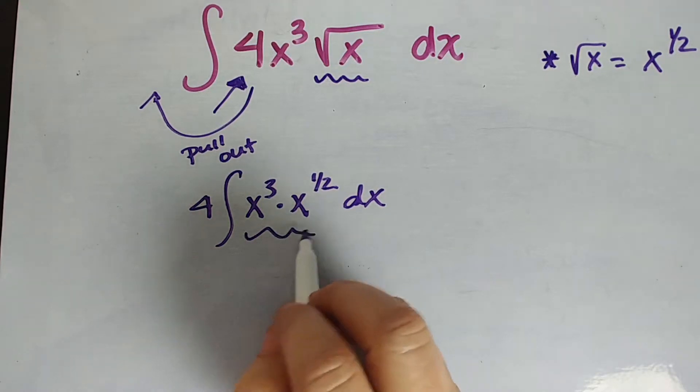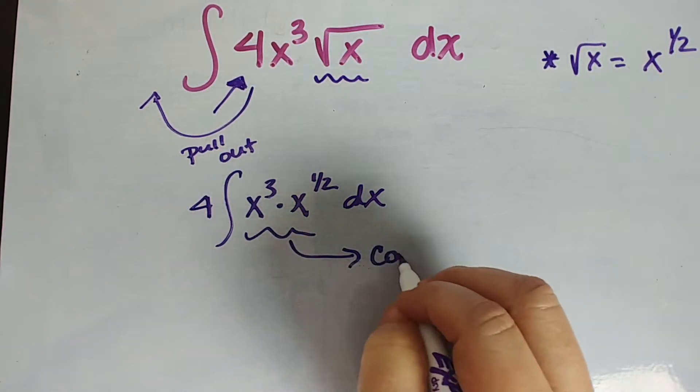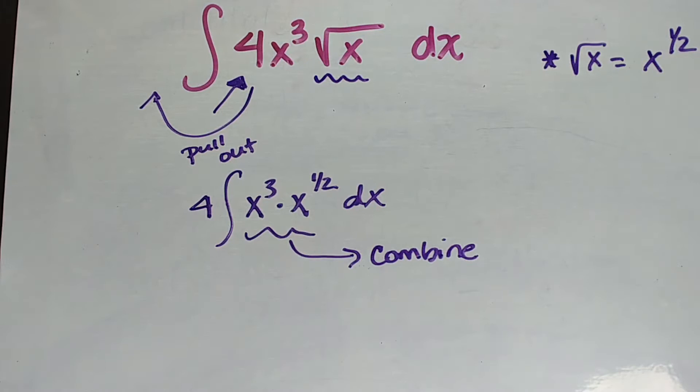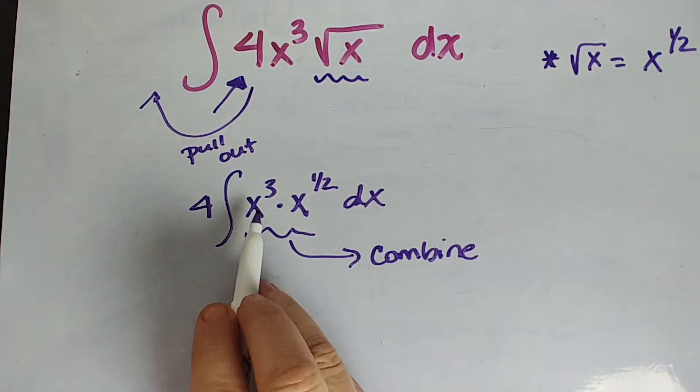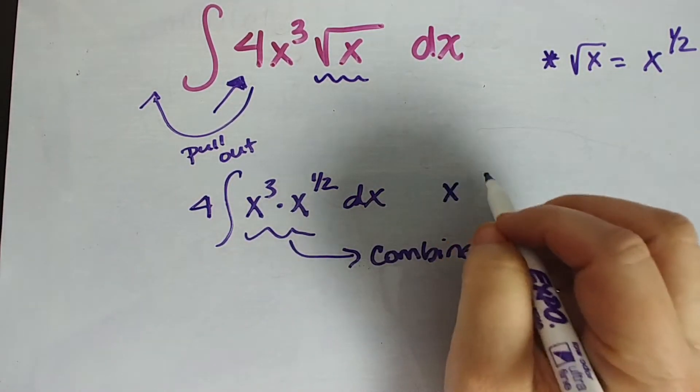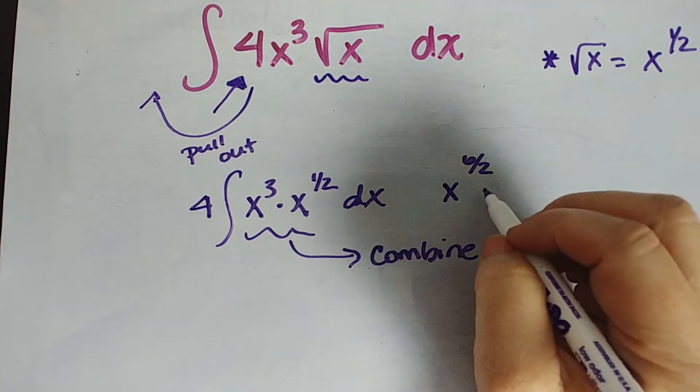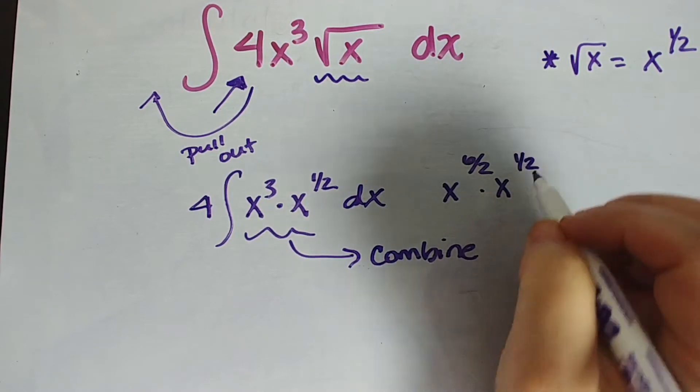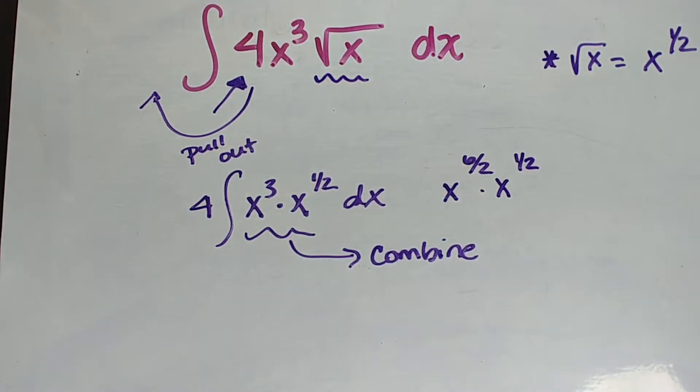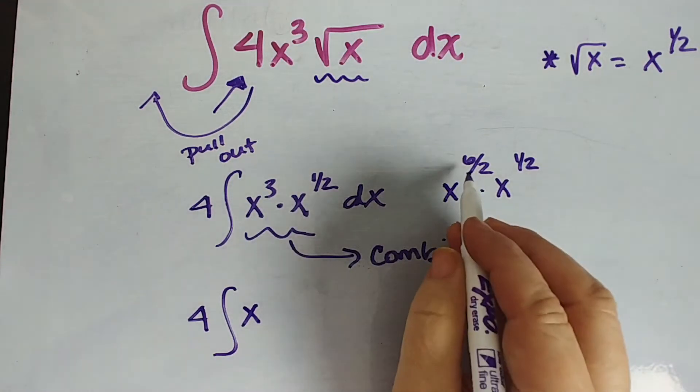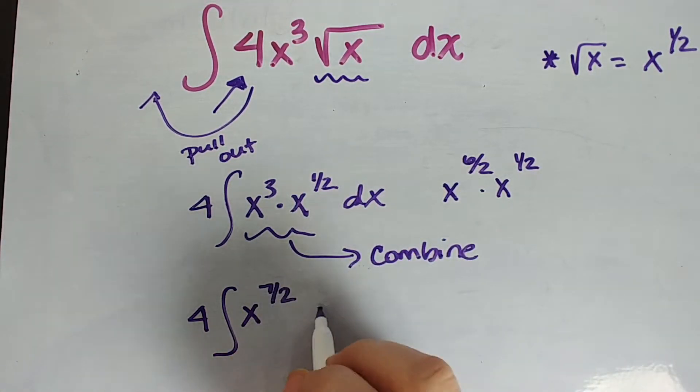Well, now we're going to combine our like terms, like it was seventh grade again, right? We're going to combine those. You wouldn't leave two times three in a problem. You would write that as six. So really x to the third is six halves. If we wrote it with a denominator of two times x to the one half. Remember when you have the same base, you add your exponents. So this is going to become four times the integral of x to the seven halves dx.